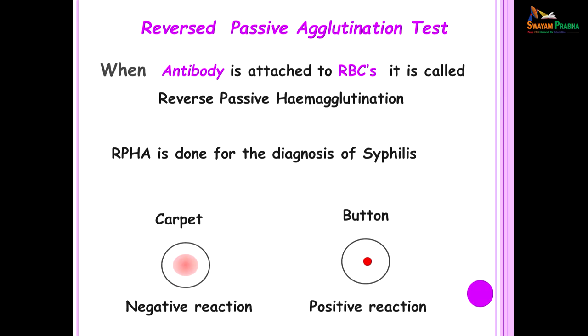In the reverse passive agglutination test, the latex particle is coated with antibody. Once antibody covers the latex particles, we add the patient serum which may contain antigen, and when there is agglutination it indicates that the particular antigen was present. When antibody is attached to red blood cells this is called a reversed passive haemagglutination test (RPHA), done for the diagnosis of syphilis. If you get a carpet at the bottom of the microtiter plate it indicates a negative reaction, whereas a button showing agglutination indicates a positive reaction.